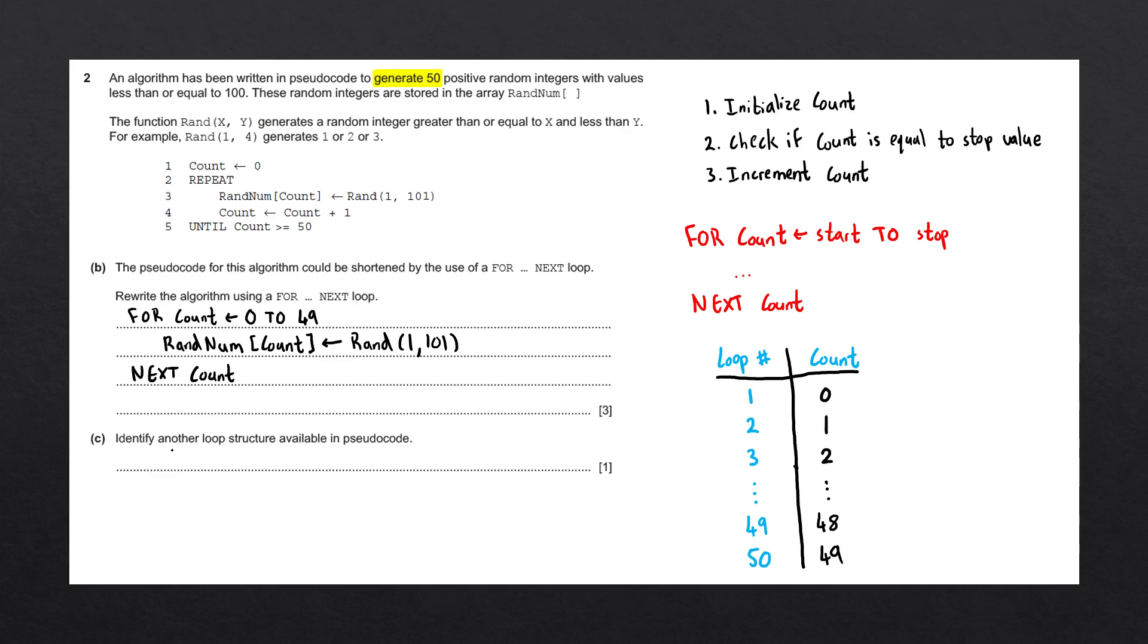Question 3 says, identify another loop structure available in pseudocode. We've used a for loop, we've used a repeat-until loop, the last loop available to us is a while loop. Another answer we could give here would be a precondition loop. Since a repeat-until loop is known as a postcondition loop, a for loop is a count-controlled loop, a while loop is then a precondition loop. But there we go, that is this question completed.